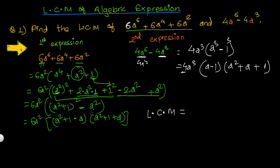To find the LCM of the two expressions, first find the LCM of the numerical coefficients: multiples of 6 are 6, 12, 18, … and multiples of 4 are 4, 8, 12, … so the LCM of 4 and 6 is 12. Next, for a² and a³ the LCM is a³, since a³ is divisible by both a³ and a².